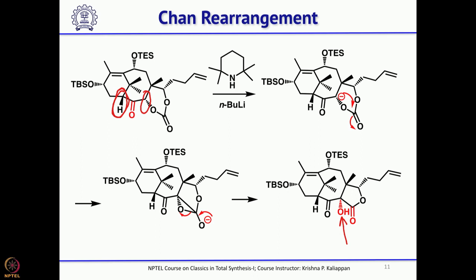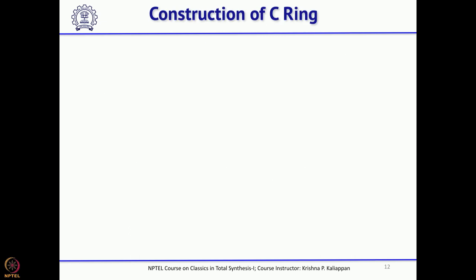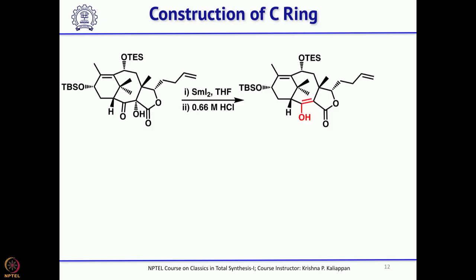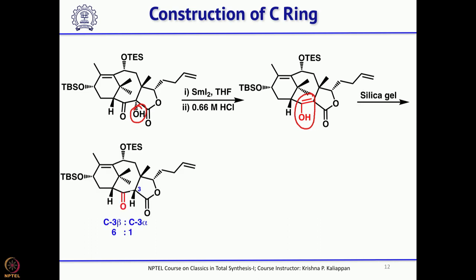The hydroxyl group is not required at that position, so it is removed with samarium iodide — a one-electron donor — which easily removes a halo or hydroxyl group adjacent to a carbonyl. Once the hydroxyl group is removed, the compound is in keto-enol form, which appears to be more stable. Treatment with silica gel gives back the ketone.